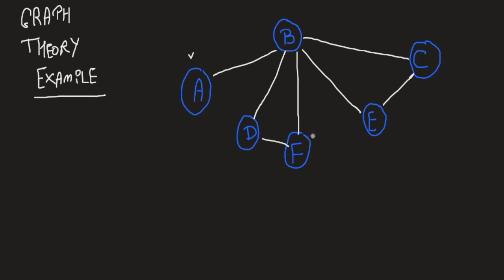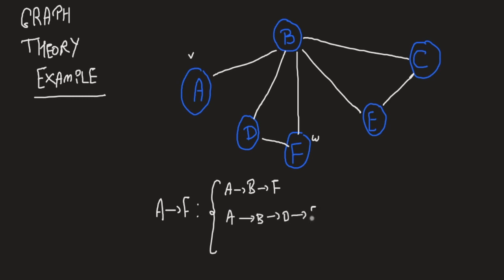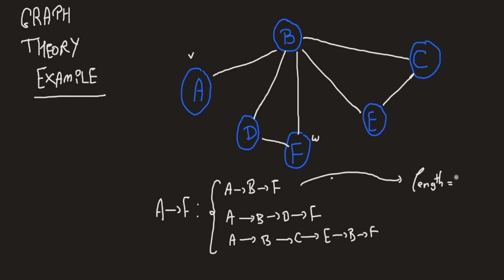For example, to go from vertex A to vertex F, the possible paths include: A→B→F (length 2), A→B→D→F (length 3), or A→B→C→E→B→F (length 5). The length of a path between two vertices is the number of edges that must be crossed when moving from one to the other.